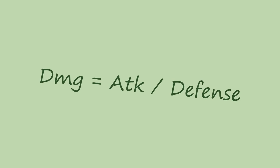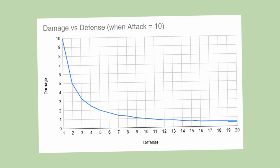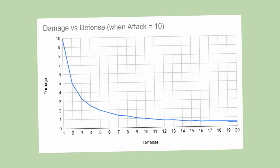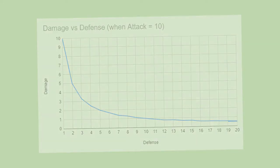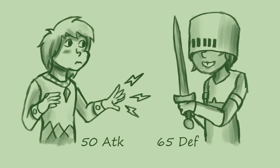Another kind of damage formula involves the attack value being divided by the defense value in some way or another, the simplest example being damage equals attack divided by defense. I made a little graph to show you how the damage of an attack decreases as the target's defense increases, assuming a constant attack value. When the target has a defense of 1, the attack does maximum damage. As the defense increases, the resultant damage gets smaller and smaller but never reaches zero, since you can't divide one number by any other number to get zero. These kinds of formulae tend to be used much more for MMORPGs, since even low level players can harm higher level players, just not very much.